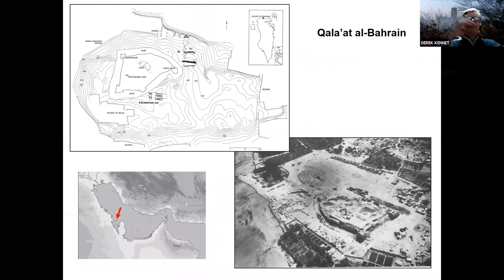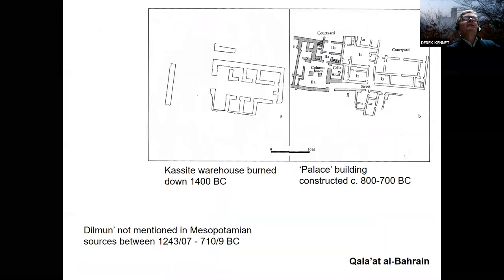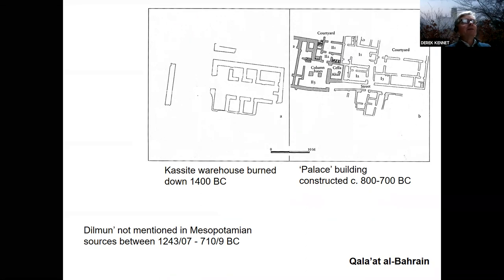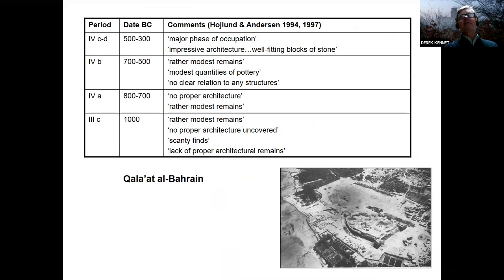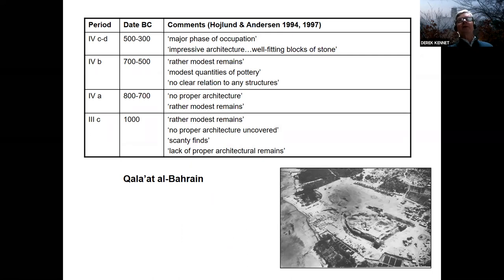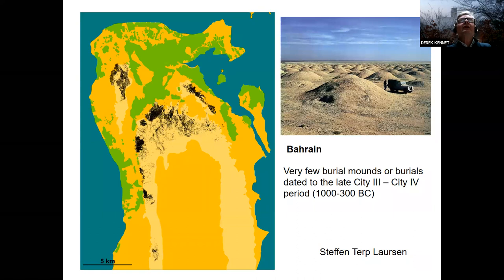We move down to Qal'at al-Bahrain — again a deep tell, and again difficult to pin down the excavators. But when we look at the evidence, we see the Kassite warehouse burned down at about 1400, there's a little bit of building, and we know that Dilmun was not mentioned in Mesopotamian sources between about the 13th and 8th century BC. Reading between the lines in Fleming, Hoyland, and Anderson's texts, I think we can detect a decline in the amount of evidence picked up in the stratigraphic excavation. When we look at the accumulating evidence, it's increasingly clear there's not much going on in Bahrain at this time. Stefan Teplársson's work on the burial mounds has also confirmed that this period, up until about 300 BC, is one of relatively little activity.